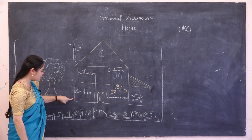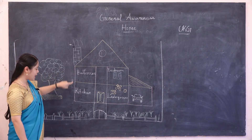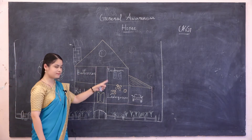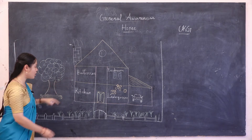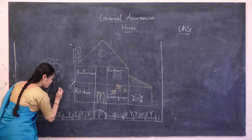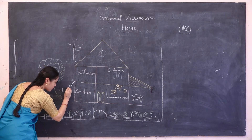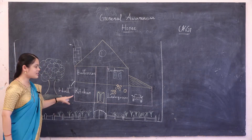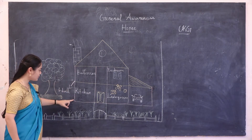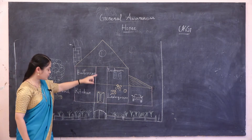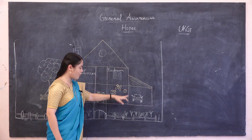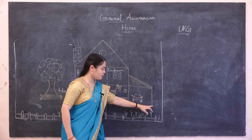What is this? Do you know what that is? Yes, this is a wall. This house has many walls. One, two, three, four and five.